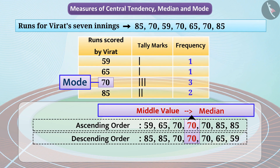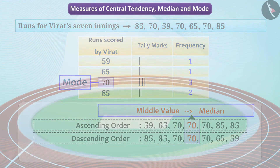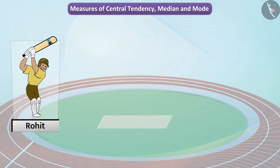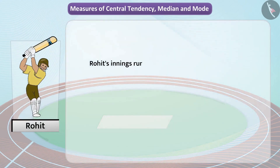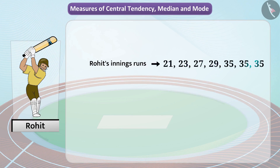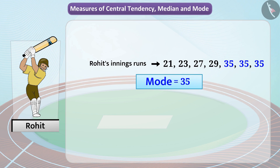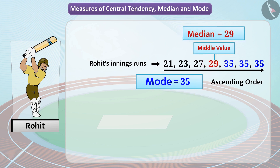The mode and the median can differ. Let us take another example to understand this. Listed here are the number of runs in some of Rohit's innings. We see that 35 is observed three times in the range, so we can call it the mode. However, on arranging the observations in ascending order, the middle value is 29 — that is, the median is 29. Thus, the mode and the median are not equal here.